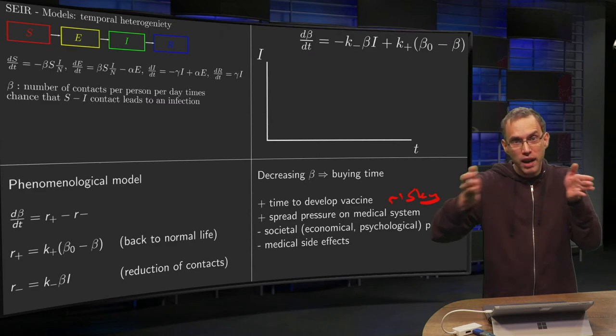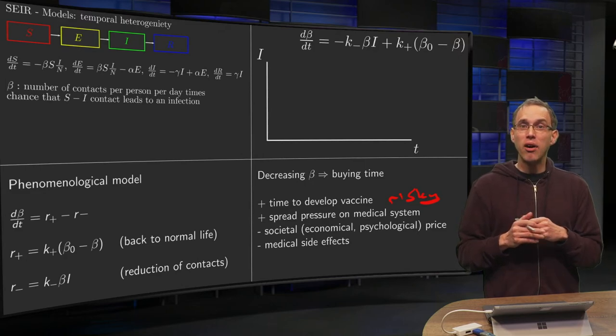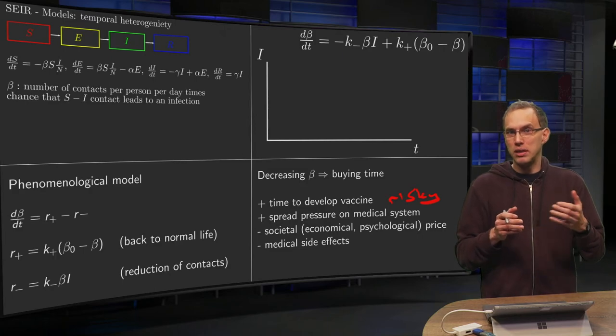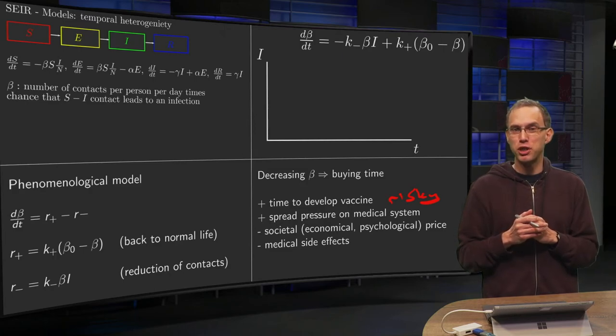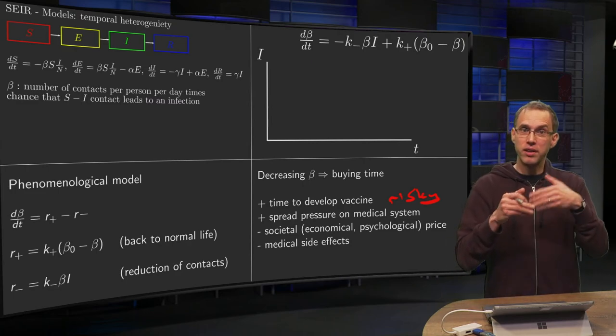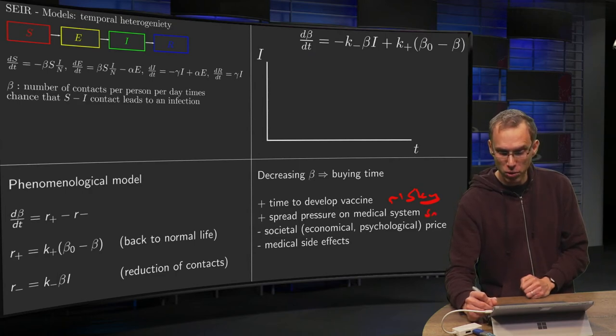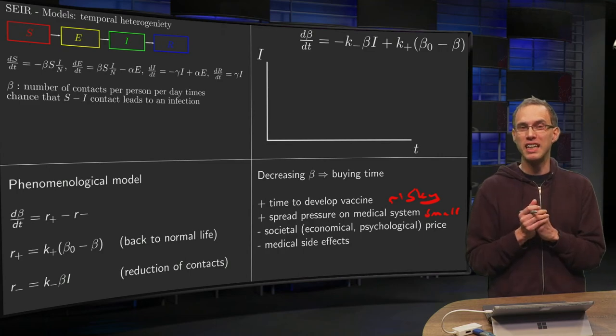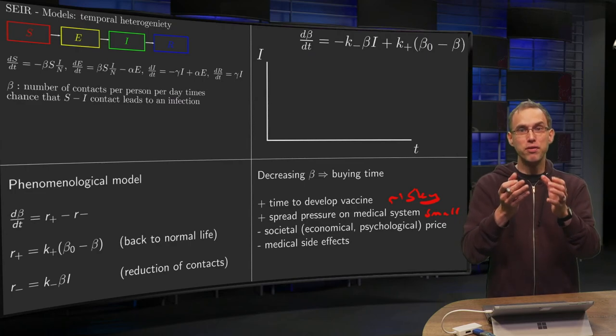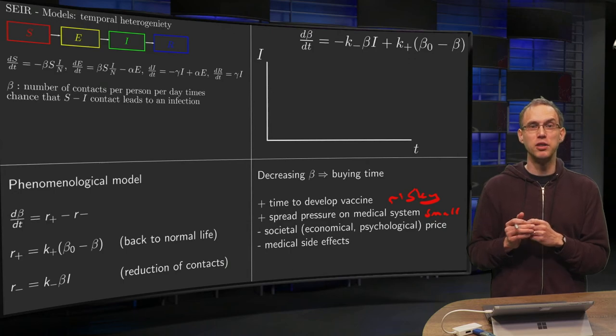Second, by spreading the infections out a bit, you reduce pressure on your medical system. However, from the perspective of the whole population, the number of people in the hospital is very small. So even if you spread it out, your gain viewed as part of the whole system is pretty small to almost negligible. It's nice for the people who can get care, but viewed from the population as a whole, this effect is kind of negligible.